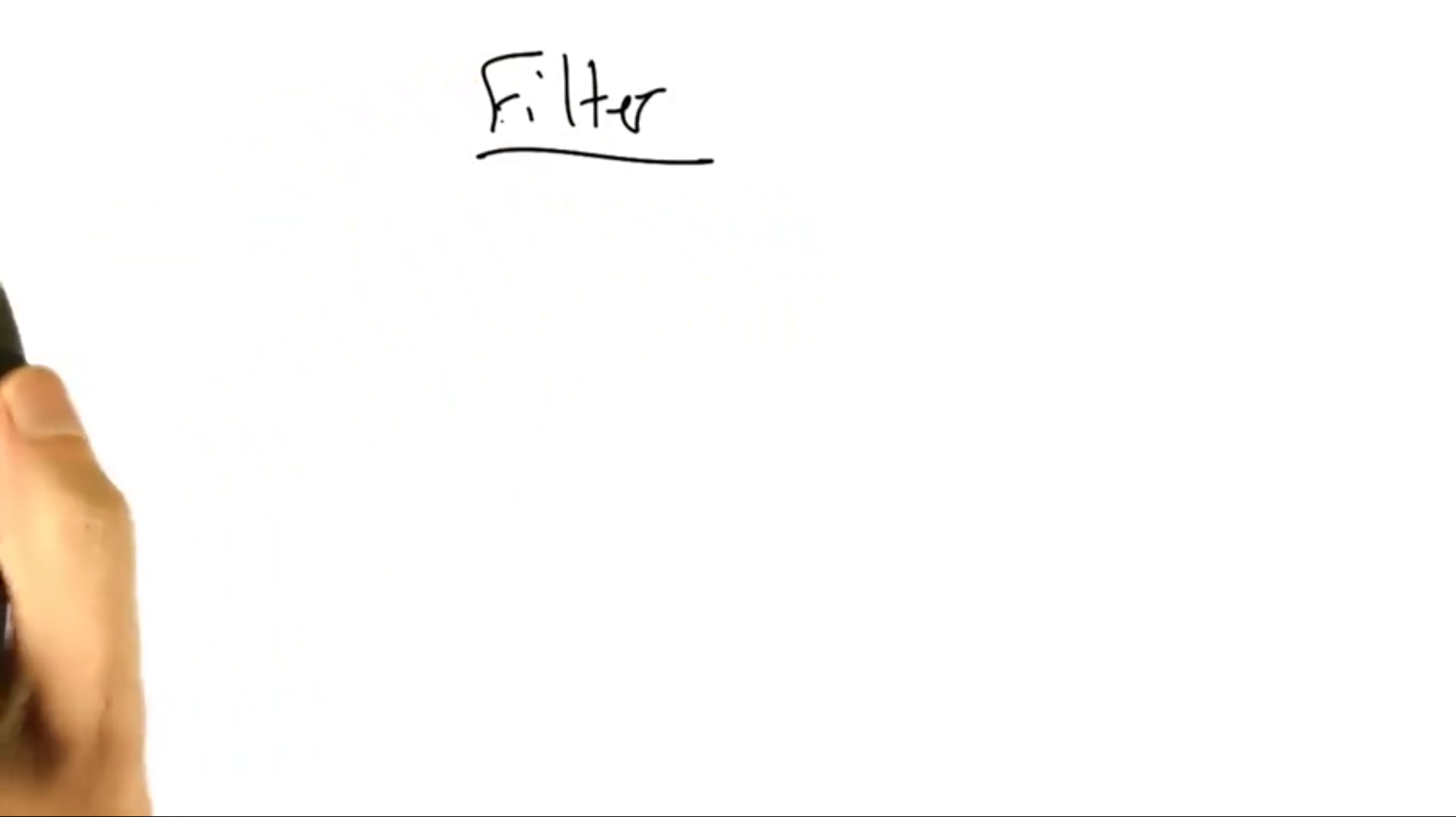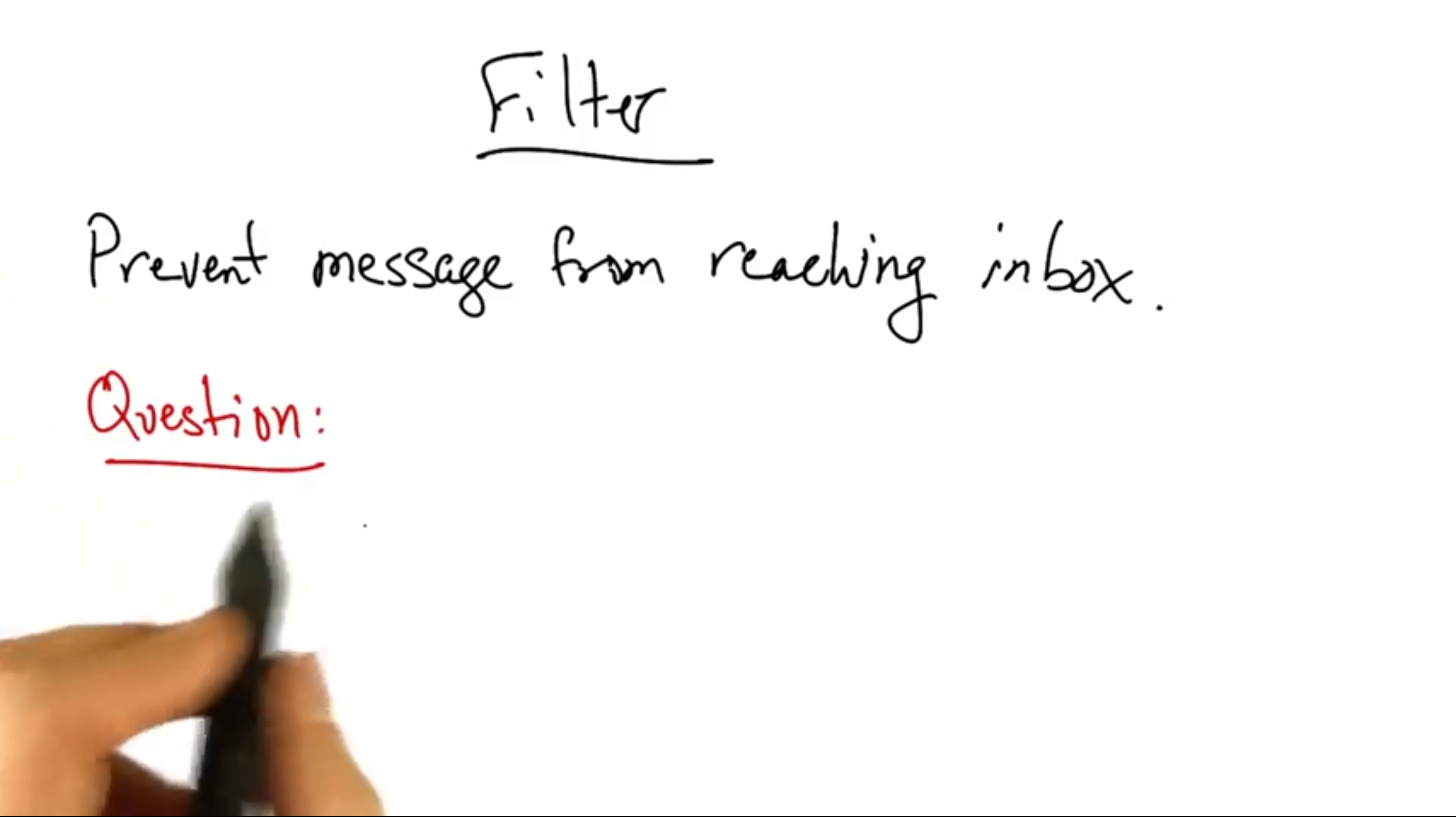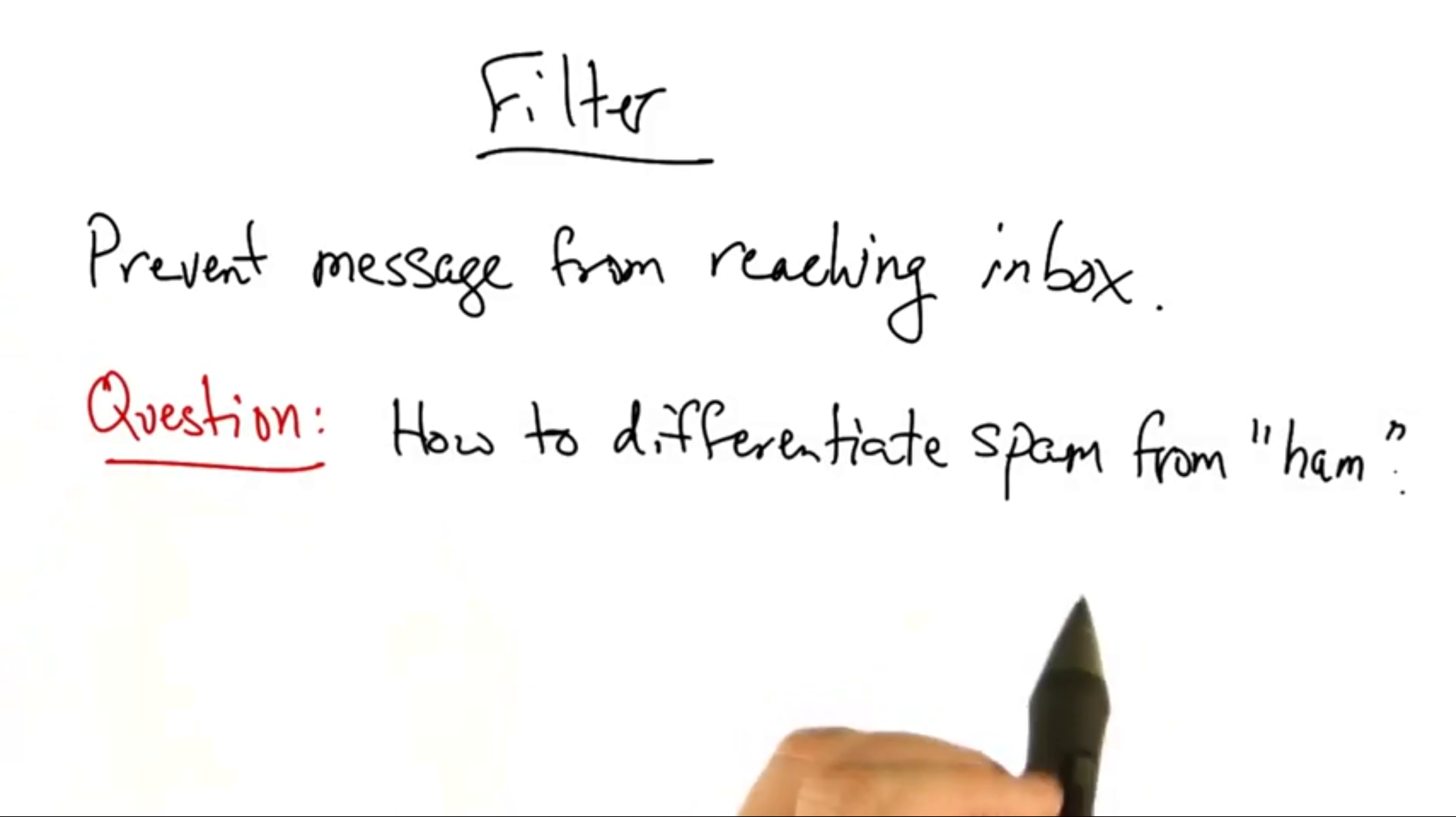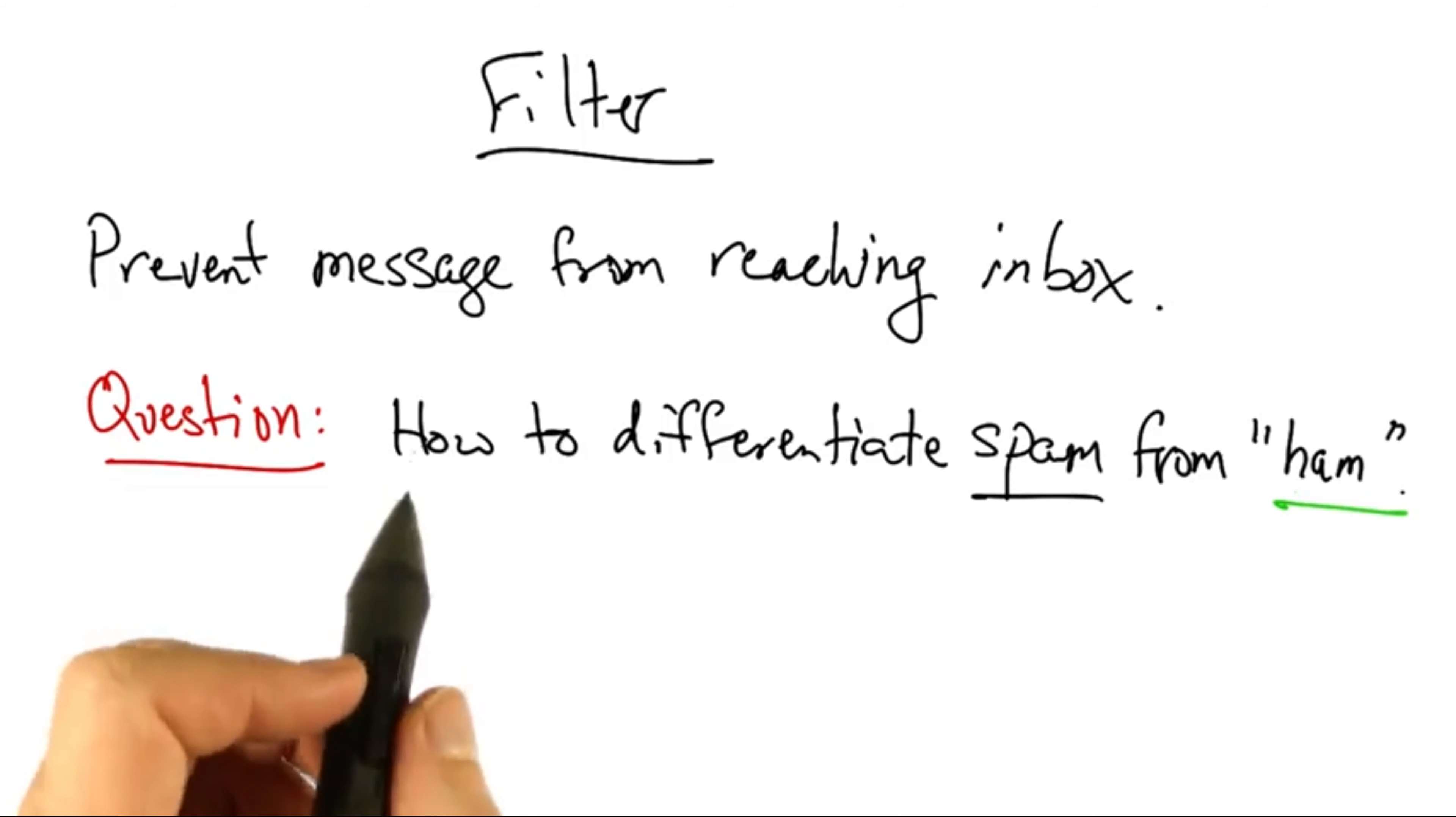A common approach for getting rid of spam messages is to filter, in other words, prevent the message from reaching the user's inbox in the first place. Now, this begs the question of how to differentiate spam or the bad messages from ham or the legitimate messages. There are three different ways to construct filters.